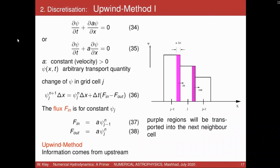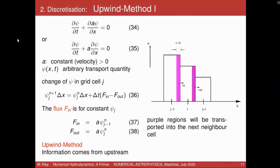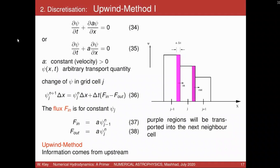We come now to the upwind method. We could improve on this and use forward time, non-centered space — this is the upwind method. It changes the right-hand side of the equation. Our model equation written in conservative form (equation 34) and non-conservative form (equation 35) both have constant velocity A. This method works also for all advection problems: it's a sample equation for density, but you can plug in rho·epsilon for the energy equation or rho·U for the momentum equation. It's very generic.